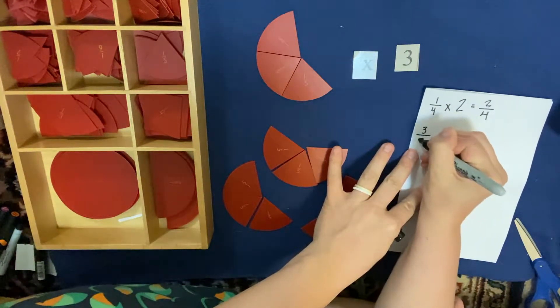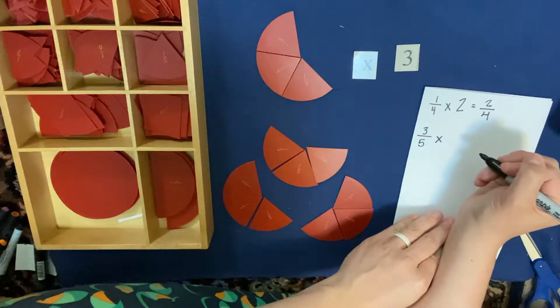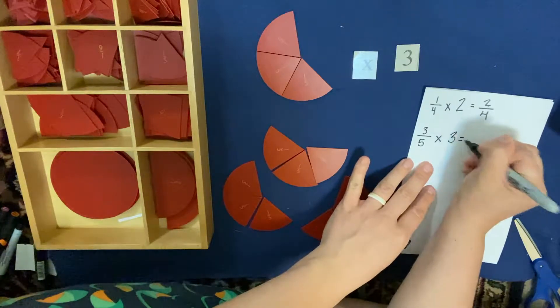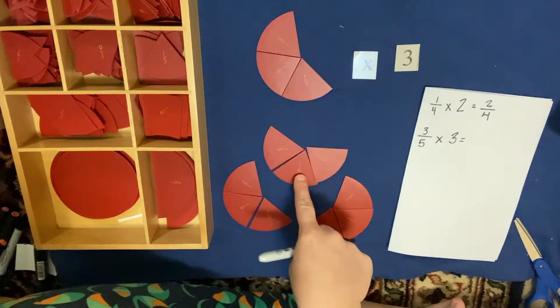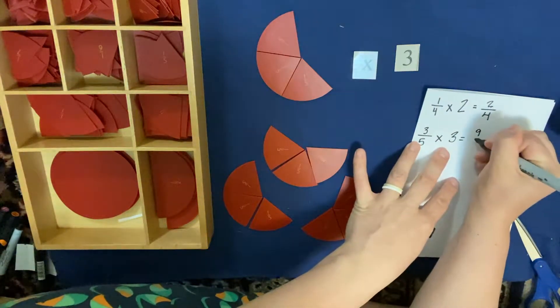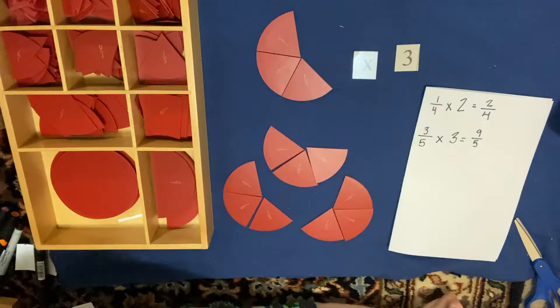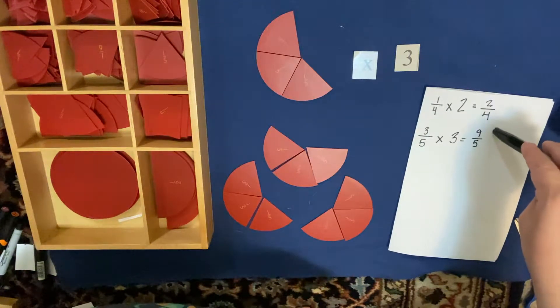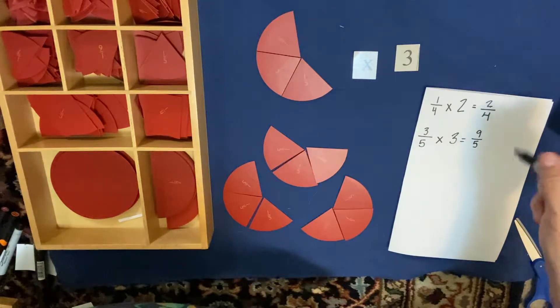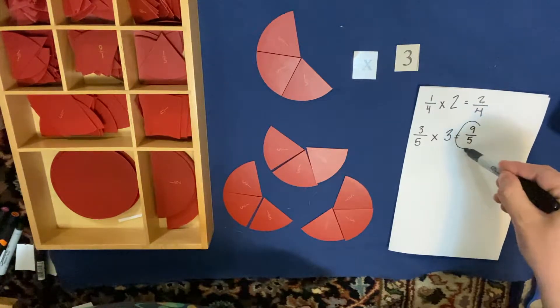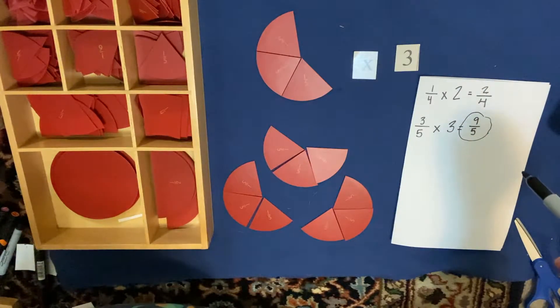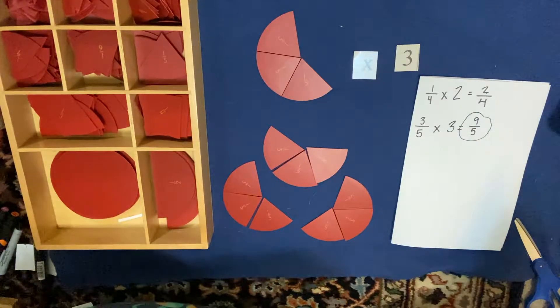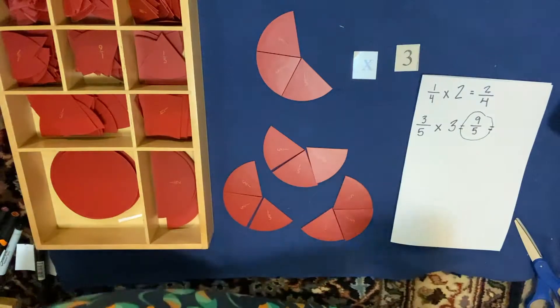I have 3/5 times 3. And we had 1, 2, 3, 4, 5, 6, 7, 8, 9. We had 9/5. And you remember from before, in the lesson on proper and improper fractions and mixed numbers, when the numerator is bigger than the denominator, it's an improper fraction. So when we have an improper fraction, another option we have is we can turn it into a mixed number.